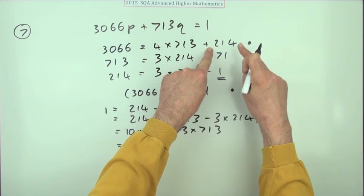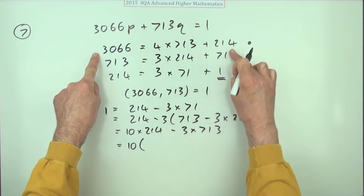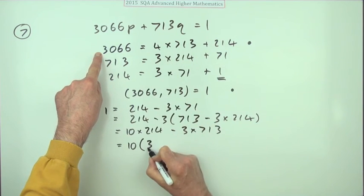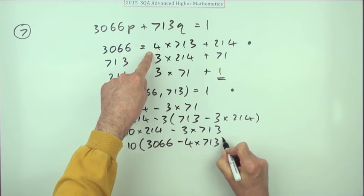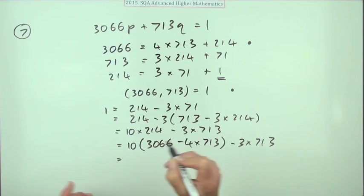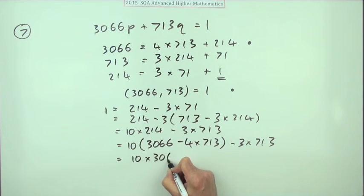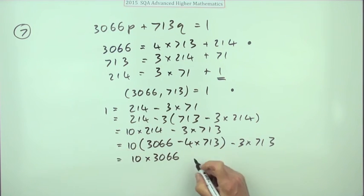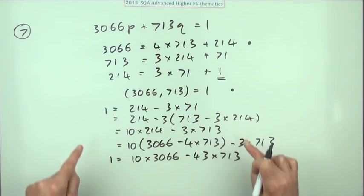And now I can replace that 214. Okay, it's the last line now. That 214 can get replaced by, and I've got 10 of them. The 214 is equal to 3066 minus 4 lots of the 713 minus 3 lots of the 713. So finally I've got 10 of them, 10 lots of 3066, that's minus 40 minus another 3, minus 43 lots of 713. I'll just put the 1 in this side which is the equivalent equation to this one.